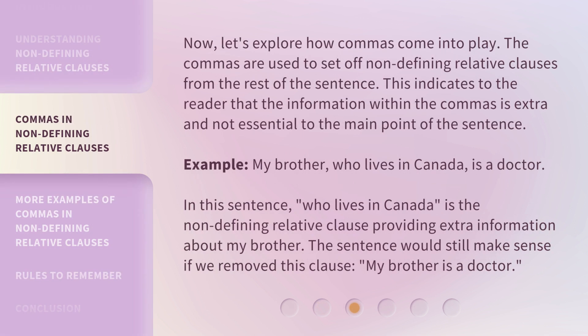Now, let's explore how commas come into play. Commas are used to set off non-defining relative clauses from the rest of the sentence. This indicates to the reader that the information within the commas is extra and not essential to the main point of the sentence. For example: 'My brother, who lives in Canada, is a doctor.' Here, 'who lives in Canada' is the non-defining relative clause providing extra information about my brother. The sentence would still make sense if we removed this clause: 'My brother is a doctor.'